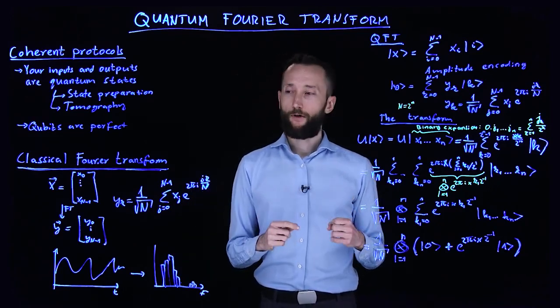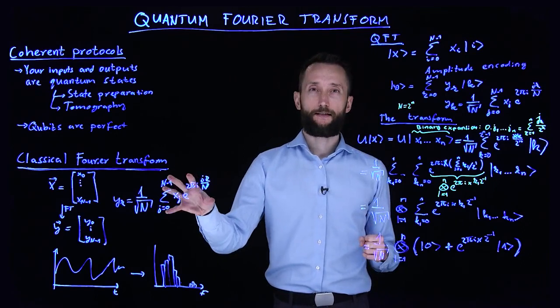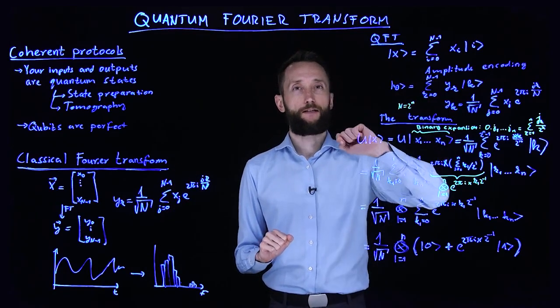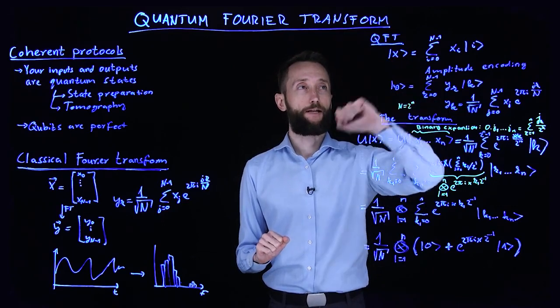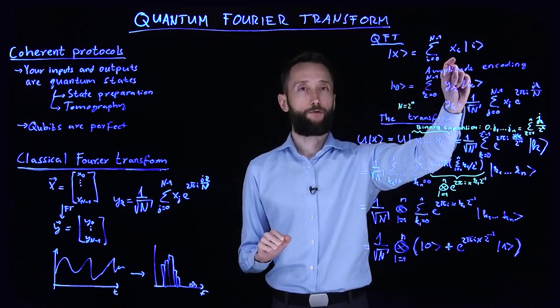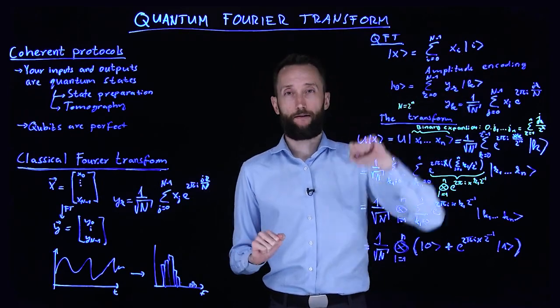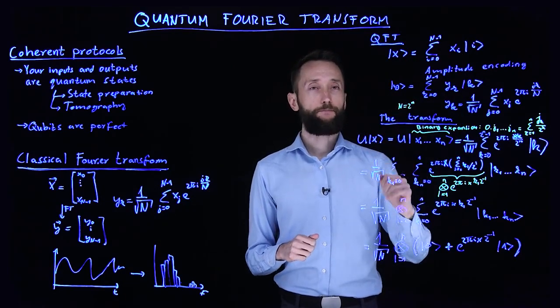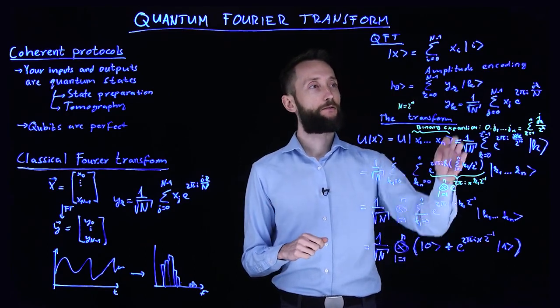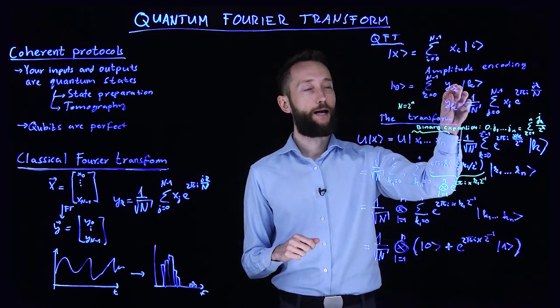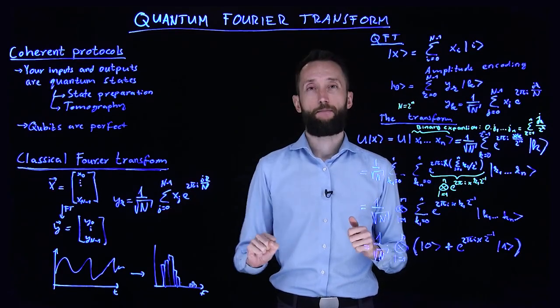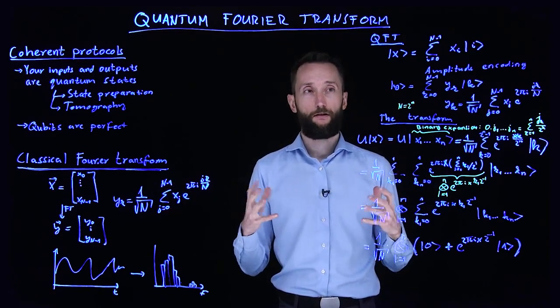Now the quantum Fourier transformation achieves exactly this operation. So now you have the quantum state encoding x in amplitude encoding. So the elements of the x vector encoding in the amplitude. And you create a new vector y by applying the quantum Fourier transformation where the elements or the amplitudes in this new vector are exactly these elements that you would do in a classical Fourier transformation.